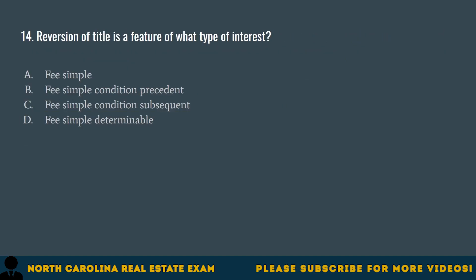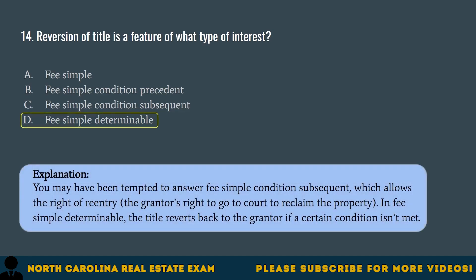Question 14. Reversion of title is a feature of what type of interest? A. Fee simple. B. Fee simple condition precedent. C. Fee simple condition subsequent. D. Fee simple determinable. The correct answer is D. Fee simple determinable. You may have been tempted to answer fee simple condition subsequent, which allows the right of re-entry — the grantor's right to go to court to reclaim the property. In fee simple determinable, the title reverts back to the grantor if a certain condition isn't met.